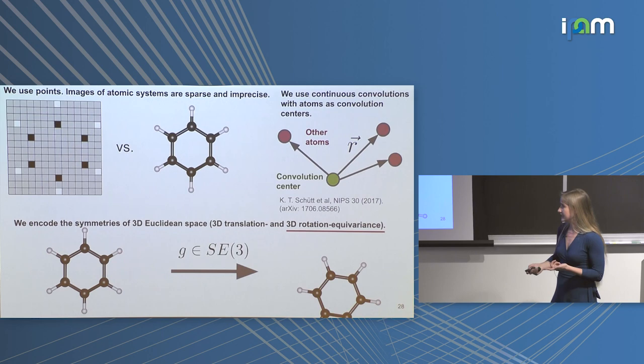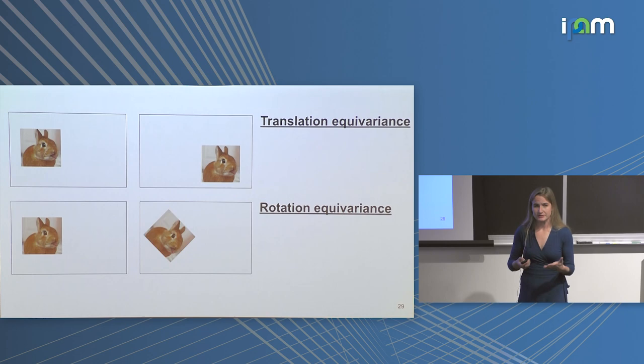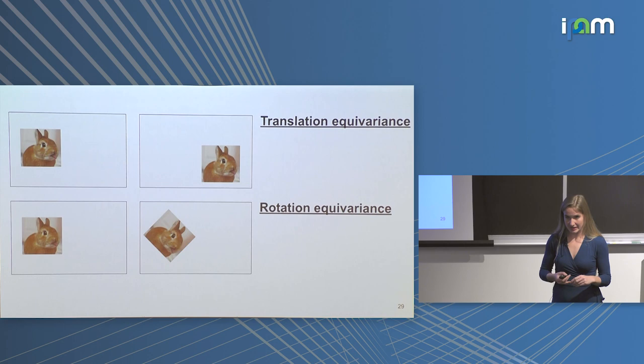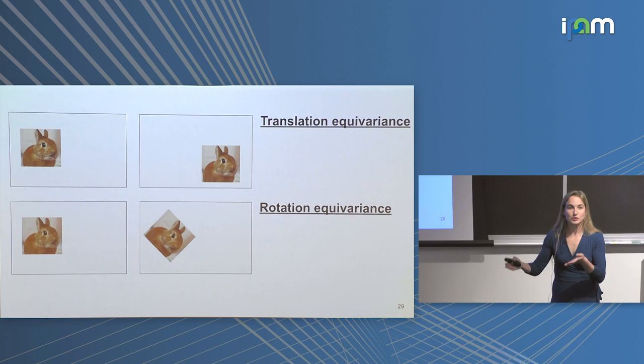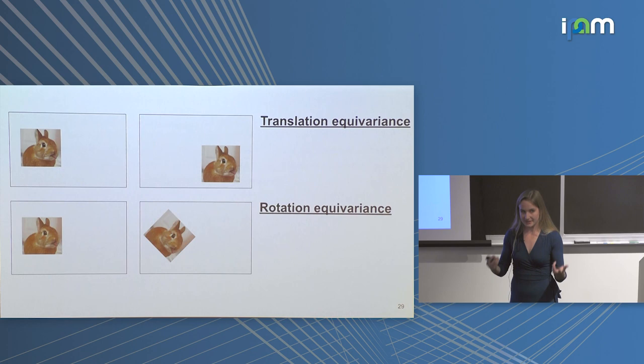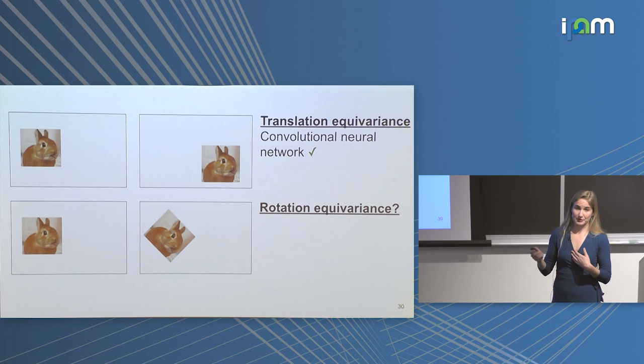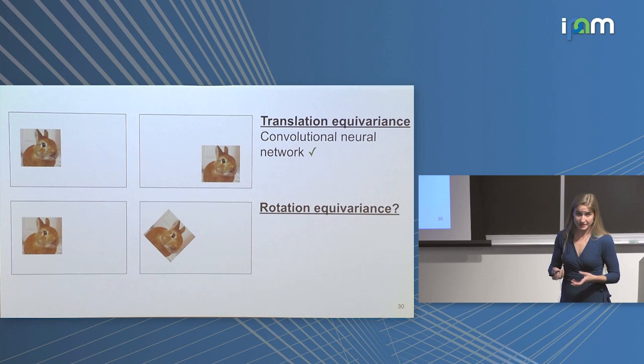The difference to encode symmetries of 3D Euclidean space is making the network translation and rotation equivariant. For translation equivariance: if I train a network to identify a rabbit in one part of an image, I'm guaranteed to identify a rabbit in any other part of the image and identify where it moved to. Convolutional neural networks have this built in because they reuse the same kernel at all centers.